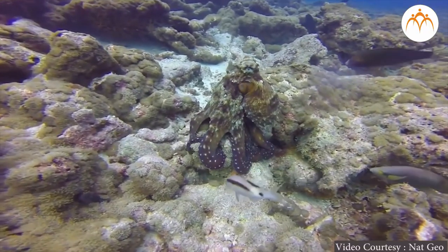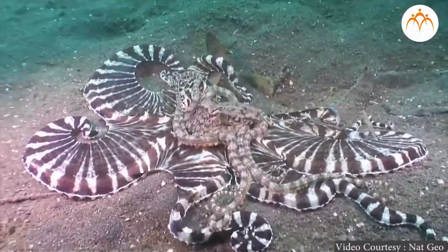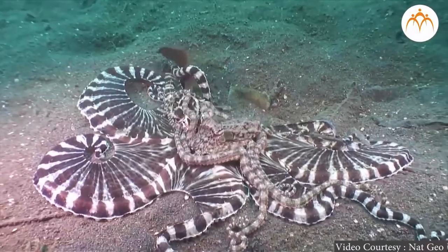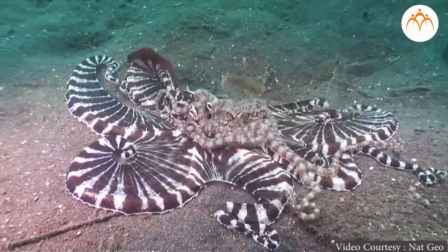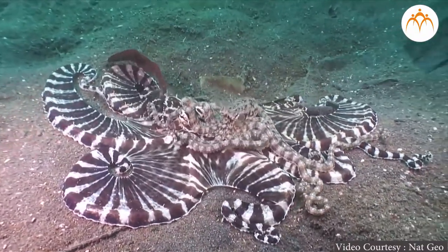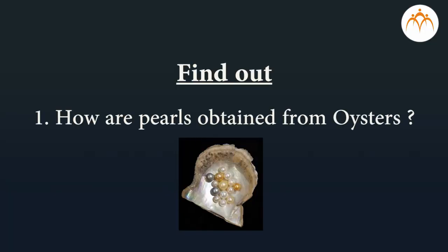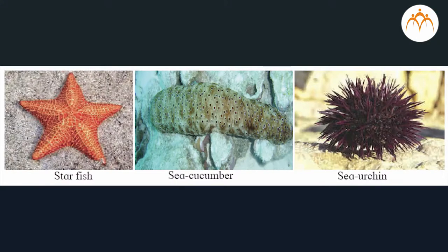The octopus is the most clever animal among all non-chordates. It can change its color and can perform three types of locomotion: swimming, creeping, and walking. Find out how pearls are obtained from oysters.